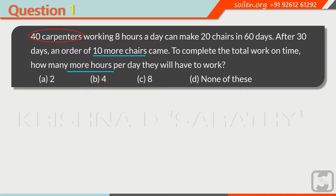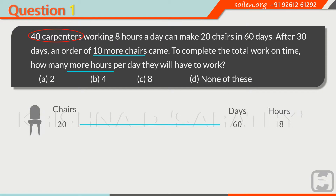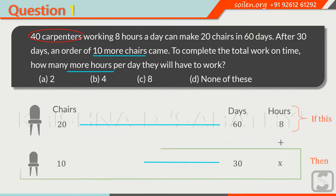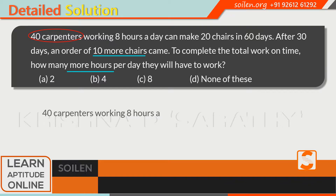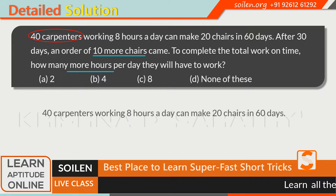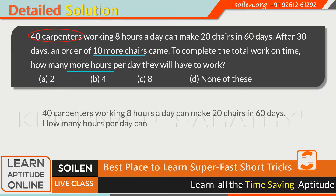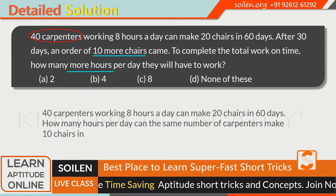You can better understand this question with the help of the following representation. 20 chairs can be completed in 60 days working 8 hours per day. And the order of 10 chairs came after 30 days, so there are only 30 days left to complete this order — let us take X hours per day work. I can rewrite the above question like this: 40 carpenters working 8 hours a day can make 20 chairs in 60 days. How many hours per day can the same number of carpenters make 10 chairs in 30 days?